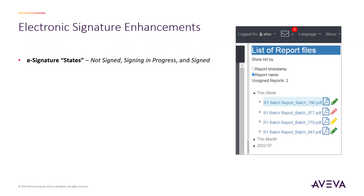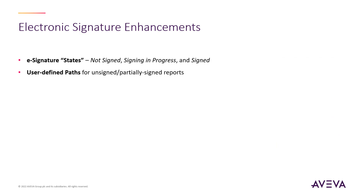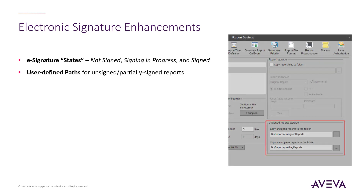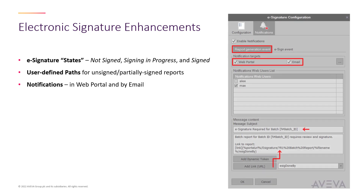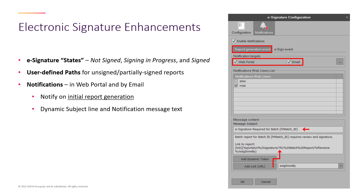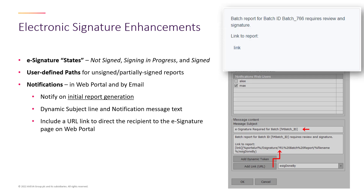Enhancements to electronic signatures include the addition of states, which give greater granularity of the state of the approval of a report. These states are graphically represented by a given color of the signature link. We've included dedicated destinations for reports that are in various states of completion. Another big addition to eSignature is state notification — you're now able to define and customize the workflow of notifications for approvals through the web portal and/or email. These notifications can include a direct link to the report that needs to be signed, making the process much easier for users.